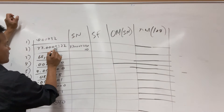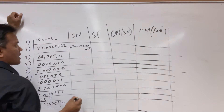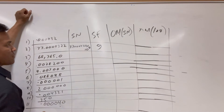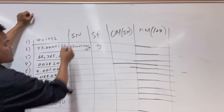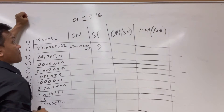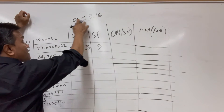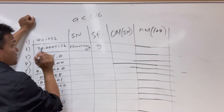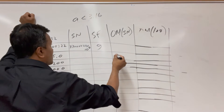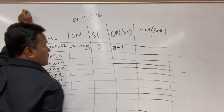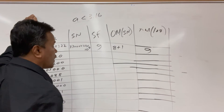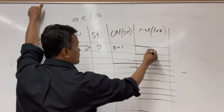Next number: approximately 7.004×10⁸. Significant figures: 1 through 8 — that is 8 sig figs. For order of magnitude: is 7.7 bigger than 3.16? Yes, so 8+1=9. Using log, this number rounds to 9. Order of magnitude is 9.